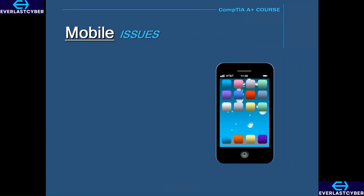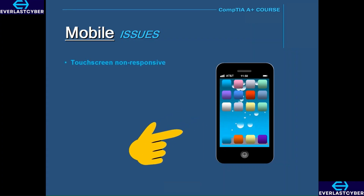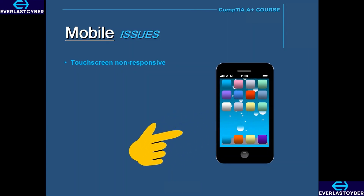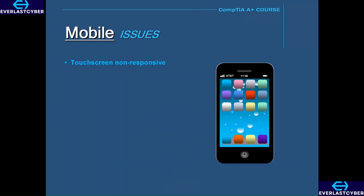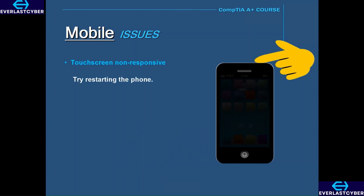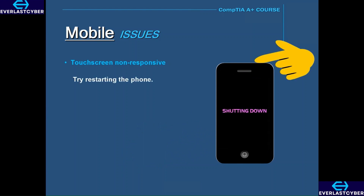A lot of cell phones today are touchscreen, and one of the common problems you may encounter with touchscreens is that sometimes they are not responsive. You touch the screen and nothing happens. When this happens, the best thing to do is to power off the phone and then turn it back on, and a lot of times this does fix the issue.